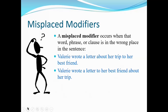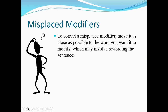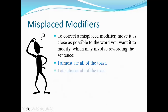'I almost ate all of the toast' — how much did I eat? None. I almost ate, then stopped. Whereas 'I ate almost all the toast' means I scarfed it down and left just a sliver. 'Is that woman over there with a small child the one who gave you the dirty look?' — it's hard to parse. Reword it: 'Is the woman who gave you the dirty look the one over there with the small child?' Now we know for sure it's the woman, not the child, who gave the dirty look.